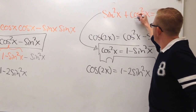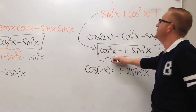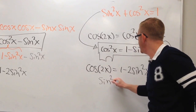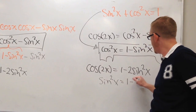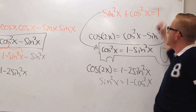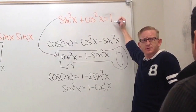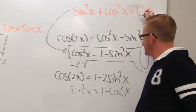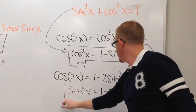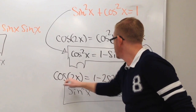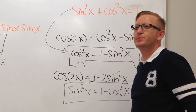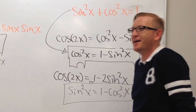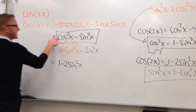Now if we take the Pythagorean identity and solve it for sine this time, we get the sine squared x is equal to 1 minus the cosine squared x. That's going to be clutch for finding our other identity.